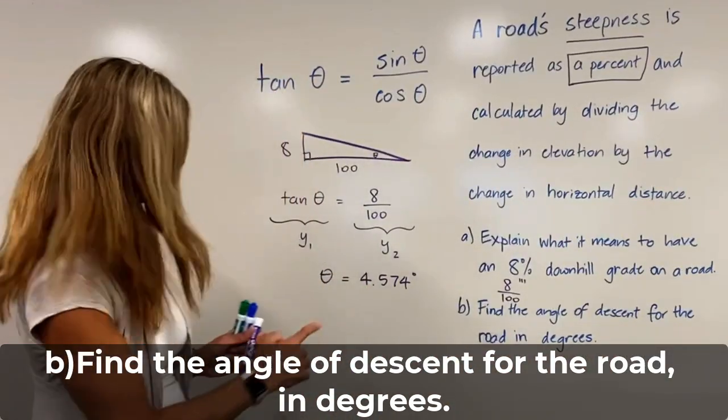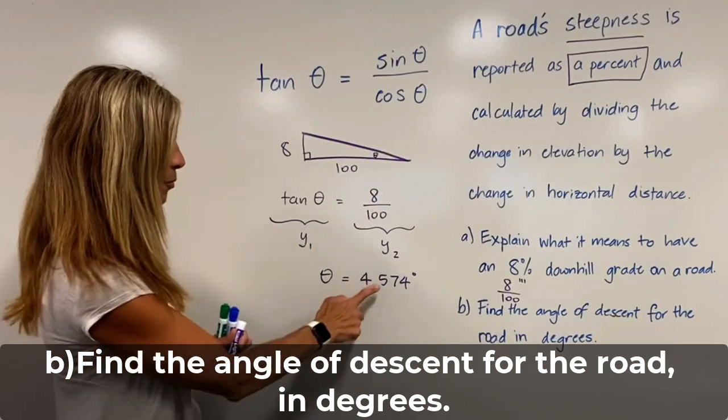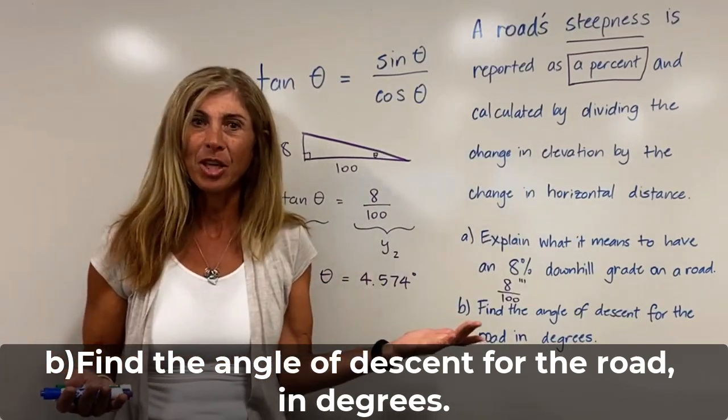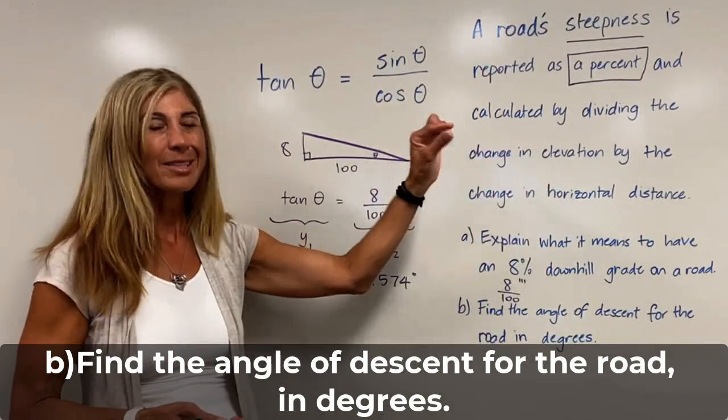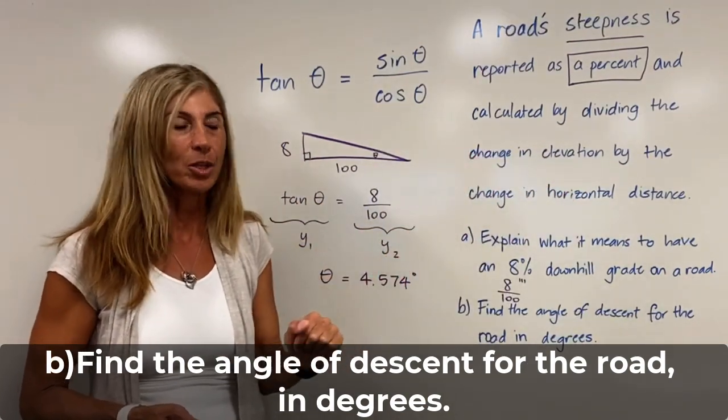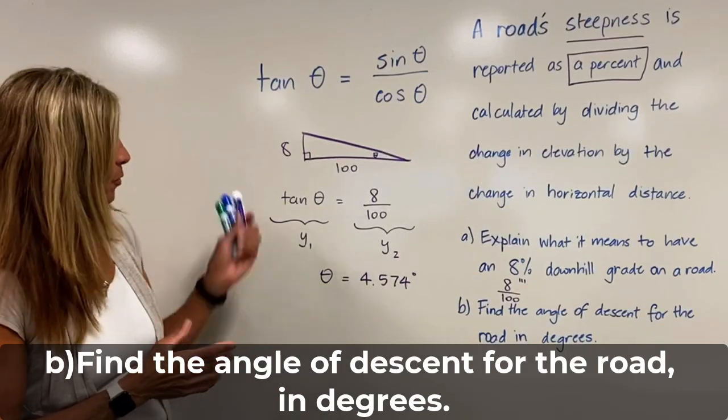So the angle that creates a tangent of eight over 100 is 4.574 degrees. Think about that. That does make logical sense. If I'm running 100 feet and I'm dropping eight, that's not a very steep angle of decline. So that would be our angle of descent for the road in degrees.